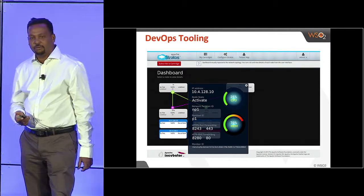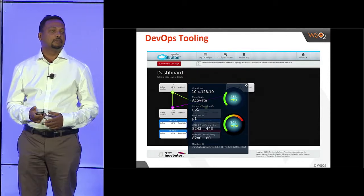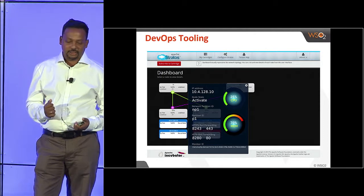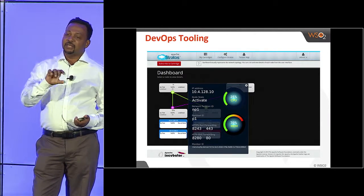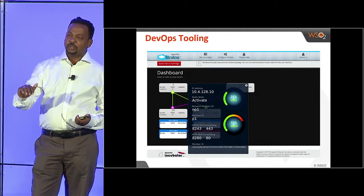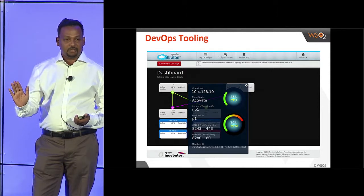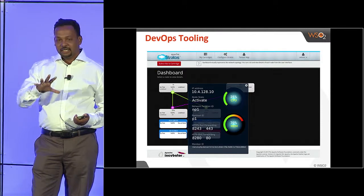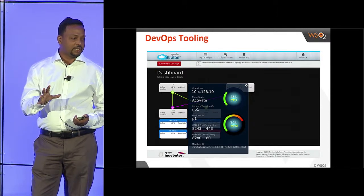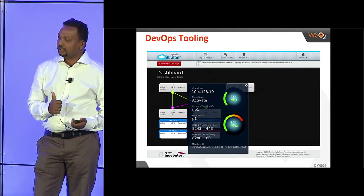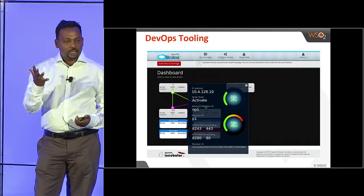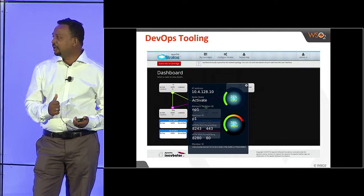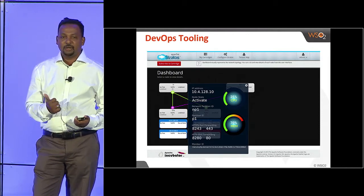Stratos has comprehensive DevOps tooling to help tune and provision the infrastructure. Events published into the event bus are collected by the complex event processor, and these metrics can be gathered and processed. This is an example screenshot where DevOps can monitor the state of the cloud system and make provisioning or capacity planning decisions.